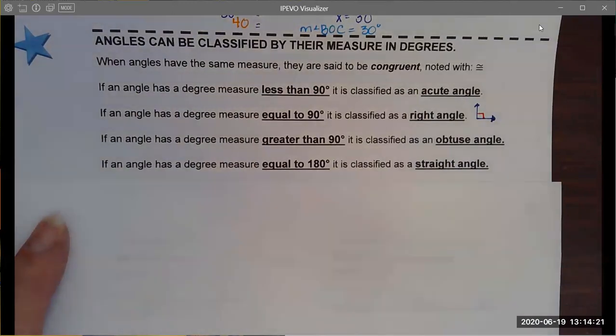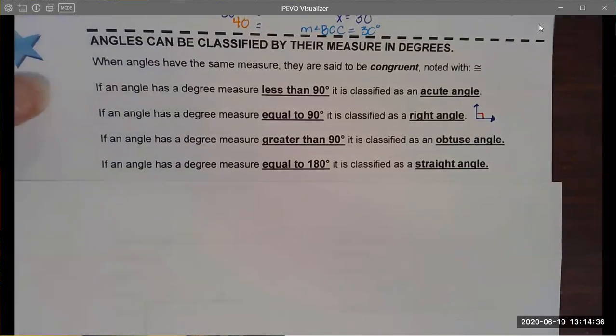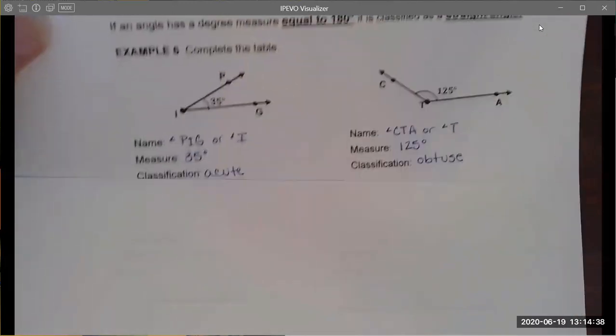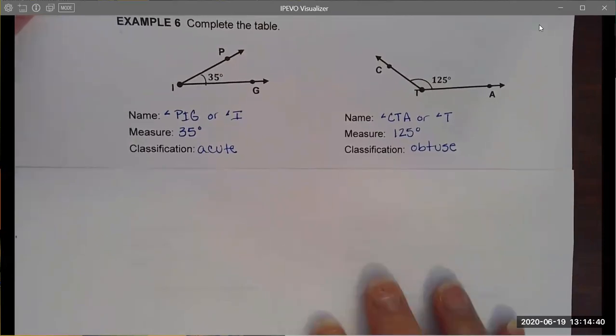We described the four different types of categorizations of angles based on their angle measure. Those would be acute angles, right angles, obtuse, and straight angles. Straight angles might be the only one that is a little bit new to you and that is basically saying that if you have three points on a line, that line also constitutes a straight angle.